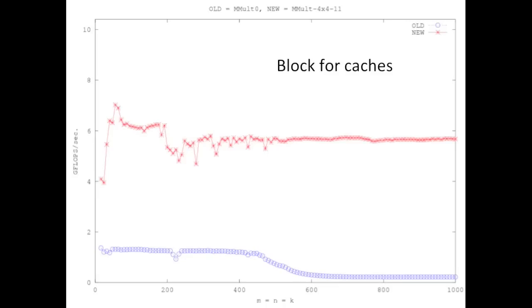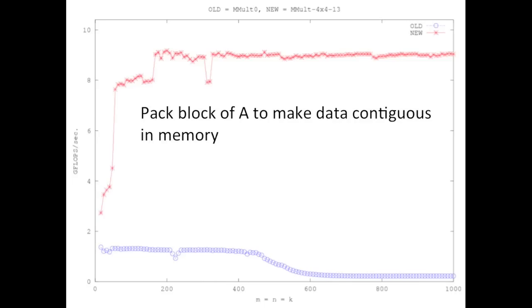Well, it turns out there's some benefit to taking that block of A that you're trying to keep in the L2 cache and making that data completely contiguous in memory. And often people actually transpose the block of A at that point as well, because this yields even better memory access patterns.